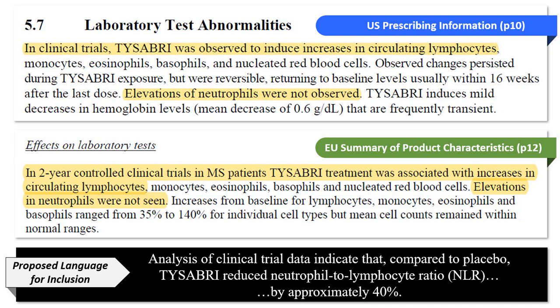The language highlighted in the U.S. Prescribing Information states: 'In clinical trials, Tysabri was observed to induce increases in circulating lymphocytes,' and 'elevations of neutrophils were not observed.' Ironically, they're sort of inverted — but if elevations of neutrophils are not occurring, that portion of the fraction isn't changing, and you get an increase in lymphocytes in the denominator. With a fixed numerator but an expanding denominator, the bigger the bottom number gets, the smaller the actual ratio gets. So the ratio is going to come down just by fourth-grade math.